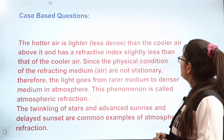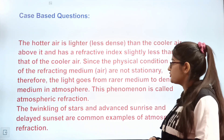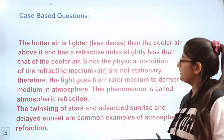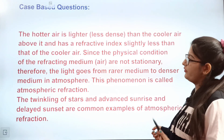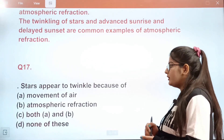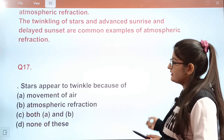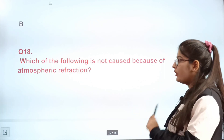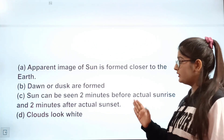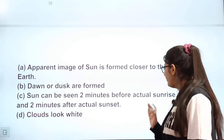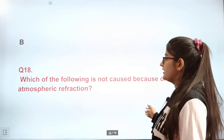Question 17 is a case-based question. The case explains that hotter air is lighter than cooler air and has a slightly lower refractive index. Since physical conditions of the refracting medium are not stationary, light bends — this is called atmospheric refraction. Twinkling of stars and advanced sunrise and delayed sunset are common examples. Q18: Stars appear to twinkle because of B — atmospheric refraction. Q19 (case sub-question): Which of the following is not caused by atmospheric refraction? Answer D — clouds look white — is not a result of atmospheric refraction.